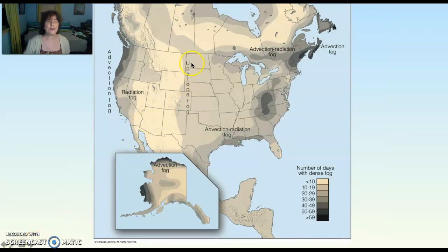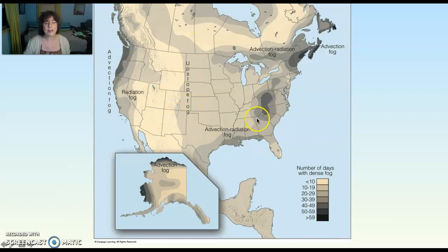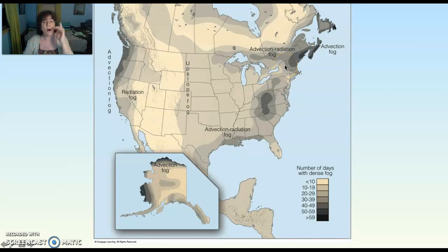This map shows where different types of fogs occur. Advection fog is very prominent in California. Upslope fog is prominent on the east side of the Rockies and also in the Great Smoky Mountain areas. Up in New England in the valleys, you tend to find radiation fogs. Hope that helps, and I'll see you on the other side.